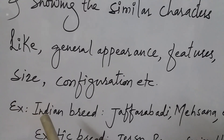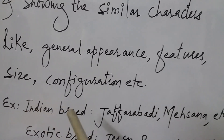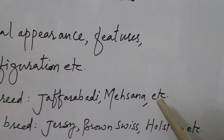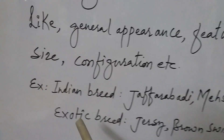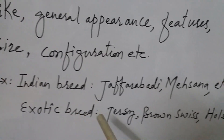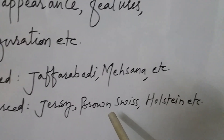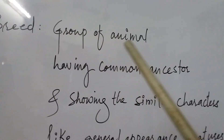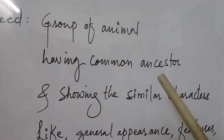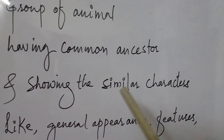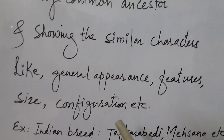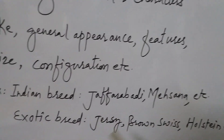Examples of breeds include Indian breeds like Jaffarabadi and Mehsana, which are buffalo breeds, and exotic breeds like Jersey, Brown Swiss, and Holstein. So a breed is a group of animals having a common ancestor and showing similar characteristics like general appearance, features, size, and configuration.